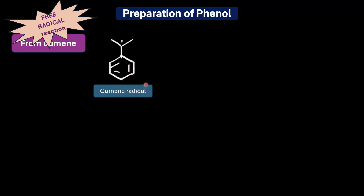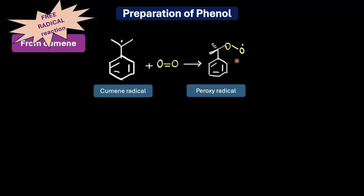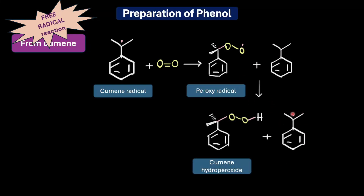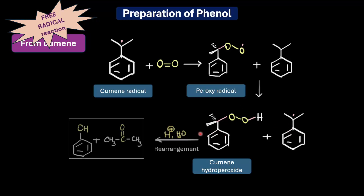Once the cumene radical is formed, it reacts with oxygen to give a peroxy radical. This peroxy radical reacts with another cumene molecule — abstracting a hydrogen atom — regenerating the cumene radical and forming cumene hydroperoxide. The regenerated cumene radical continues the chain reaction. Under acid conditions, cumene hydroperoxide then goes through a series of rearrangements giving phenol and acetone as the final products. If you're interested, do check out what kind of rearrangement transforms cumene hydroperoxide into these products.